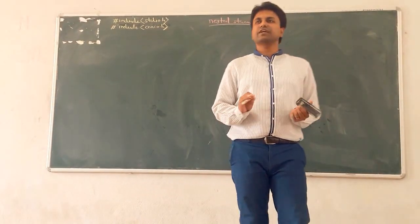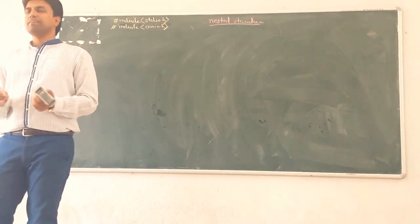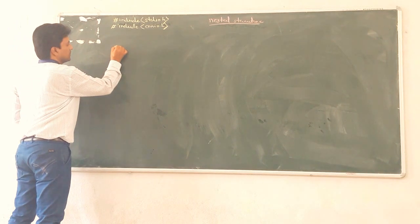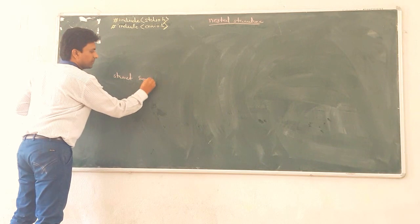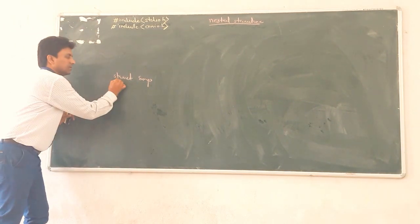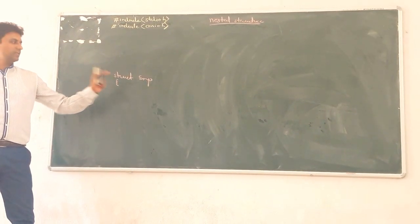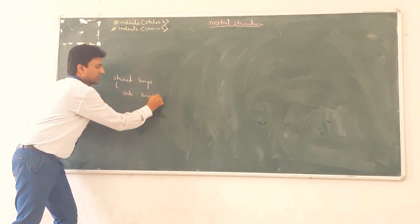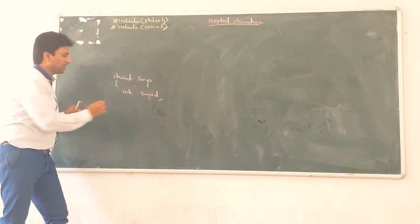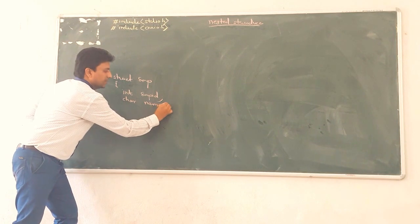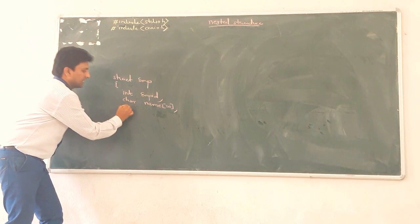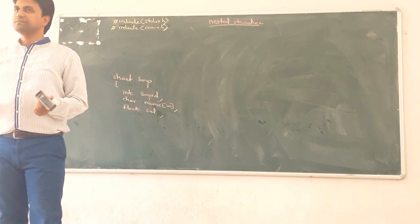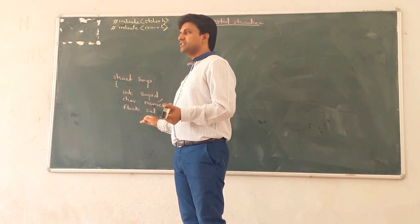Take one example. Suppose we have to create one structure for an employee record. Structure EMP has some data members: first, employee ID which is an integer; second, employee name which is a character array of size 20; third, salary which is a float; and fourth, date of joining.